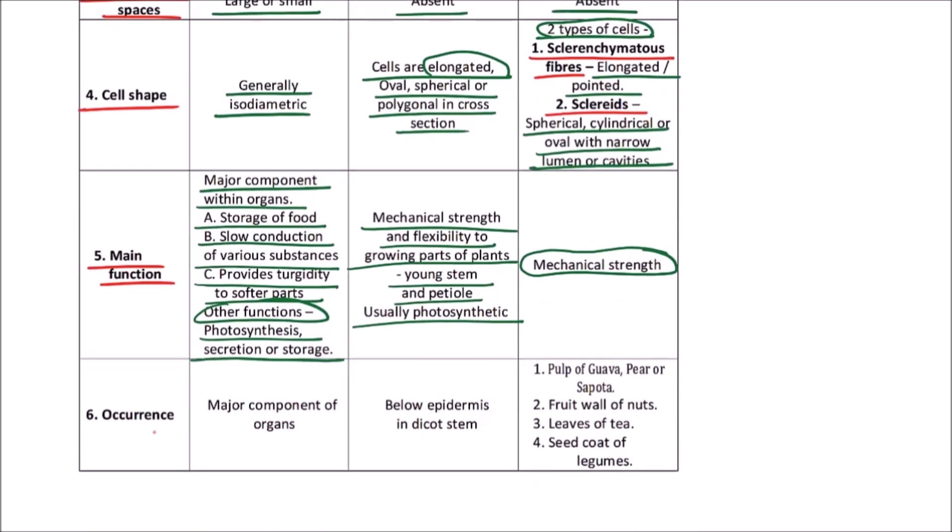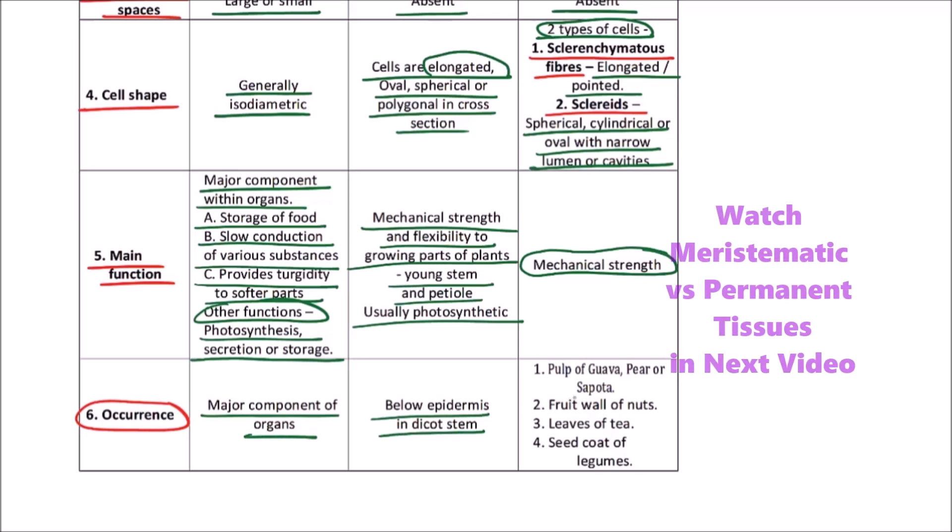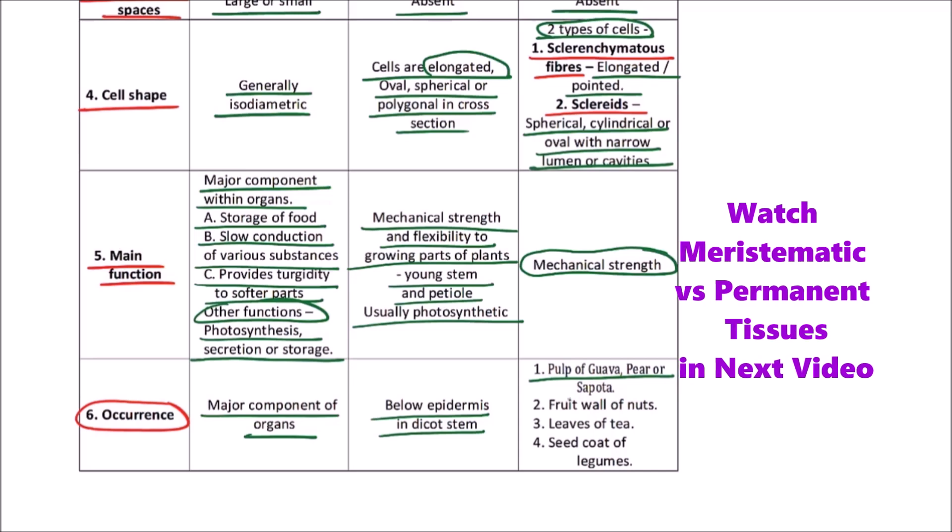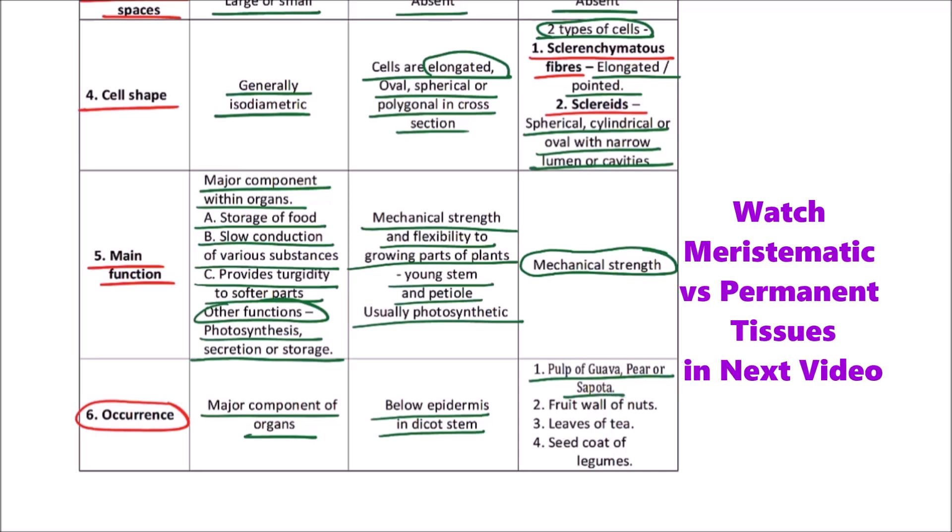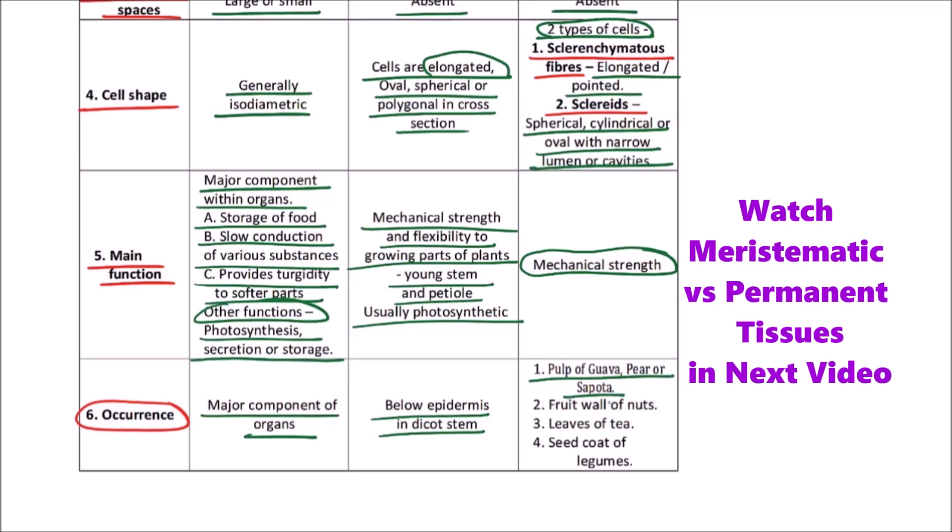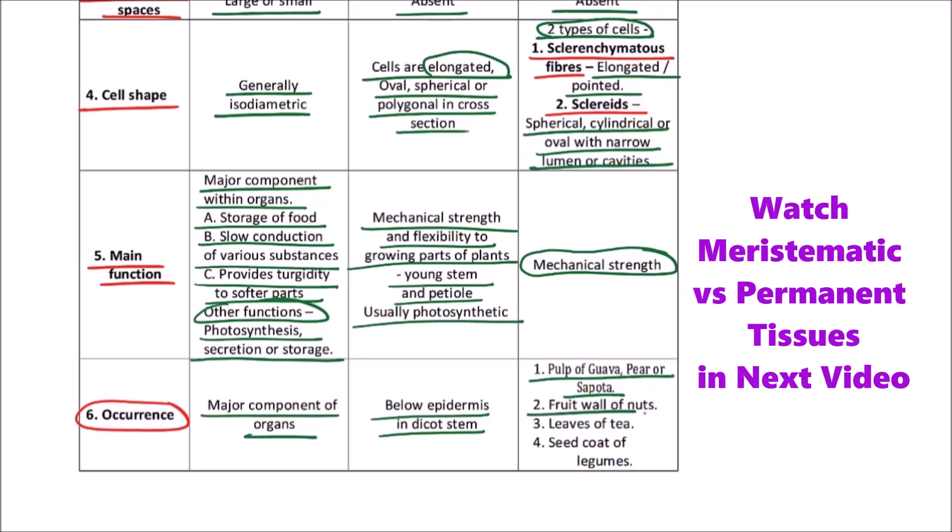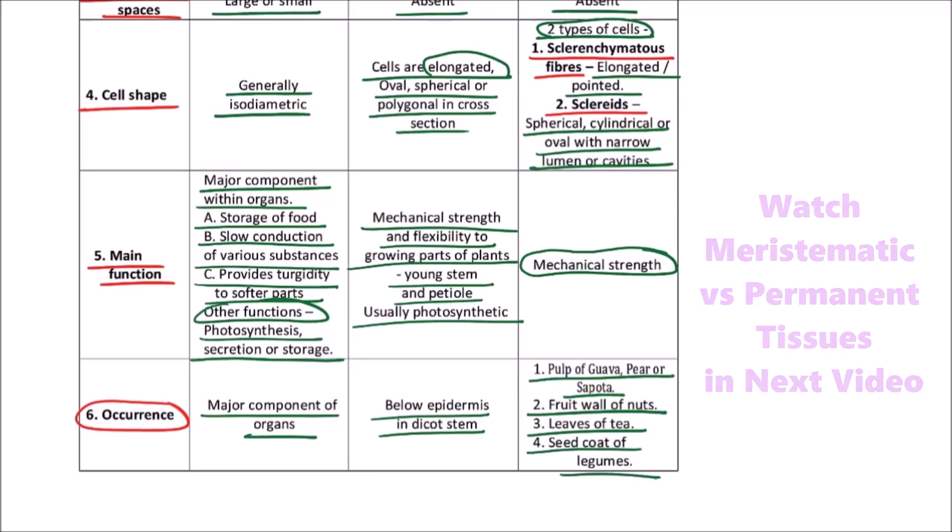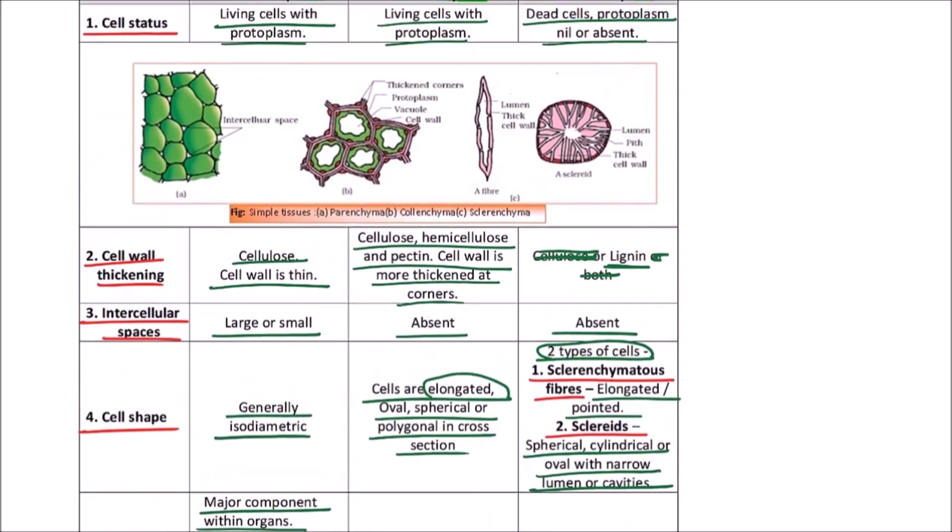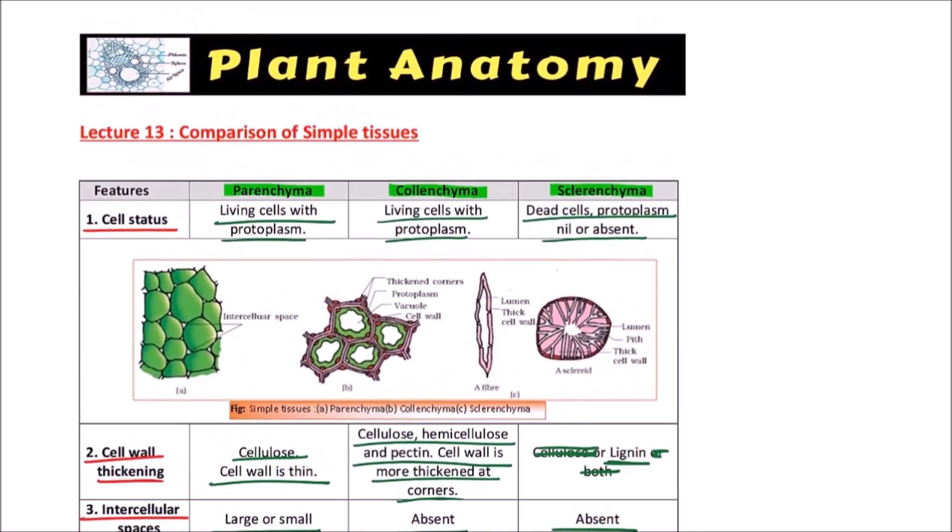Occurrence: major component of organs, it is found below epidermis in dicot stem to provide strength along with flexibility, while sclerenchyma is found in the pulp of guava, pears, or sapota. The grittiness of pulp in guava or pears is because of the sclereids or stone cells. Fruit wall of nuts, leaves of tea, and seed coat of legumes also possess the sclerenchyma.